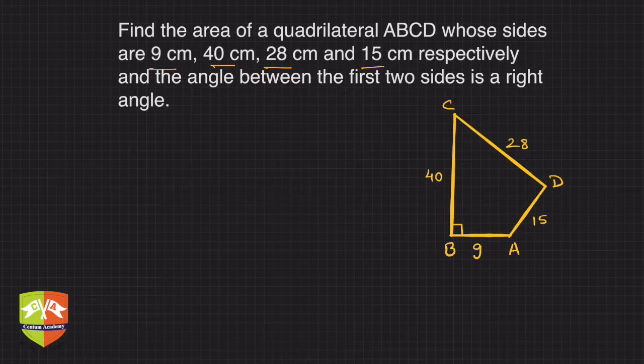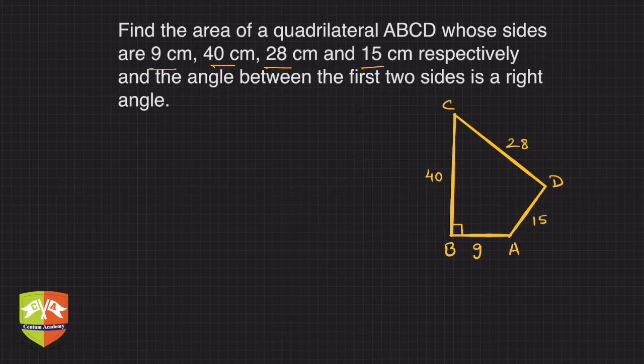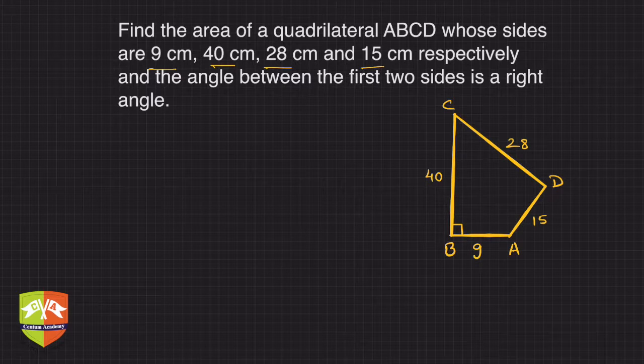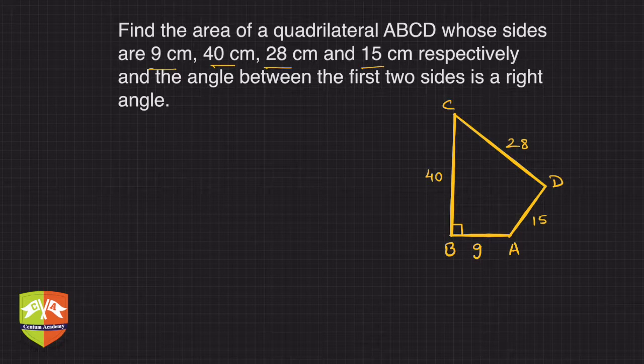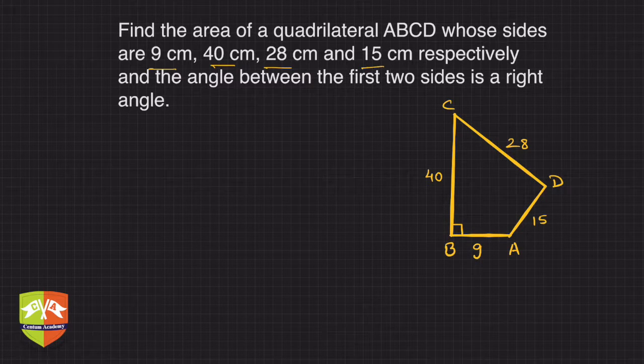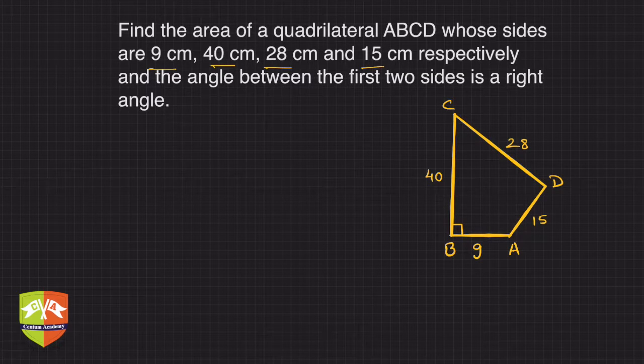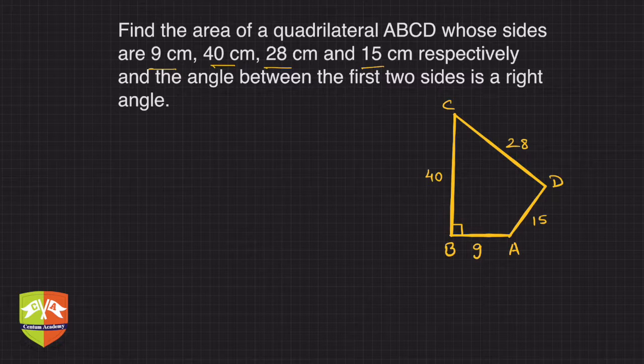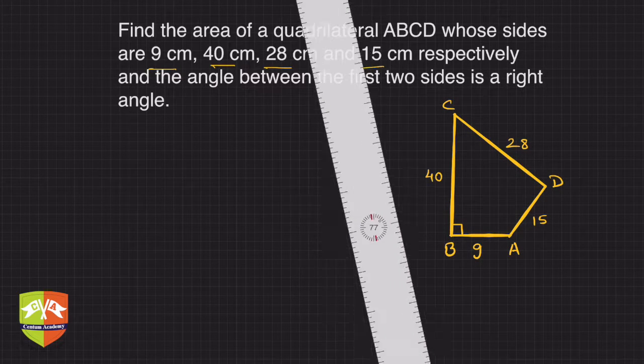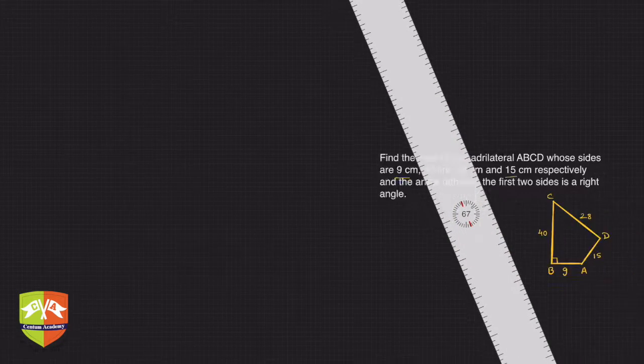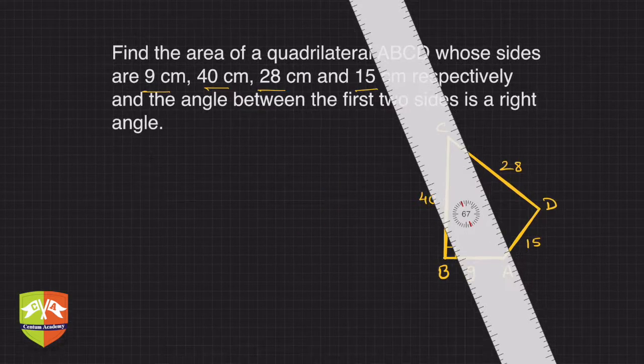This question can be solved directly using Bretschneider's formula, which we discussed in session one. But since angles are not provided, we'd have to use a lot of trigonometry. We have another method: breaking this shape into two triangles, and then we can find the area very easily.